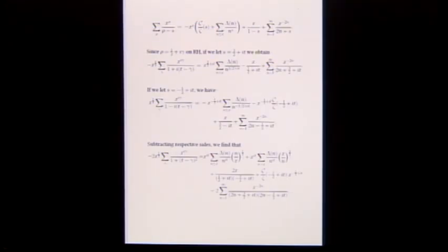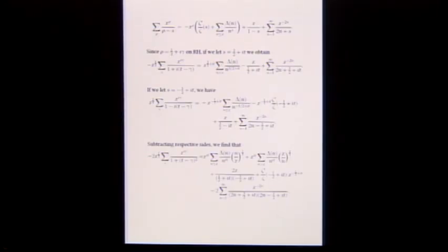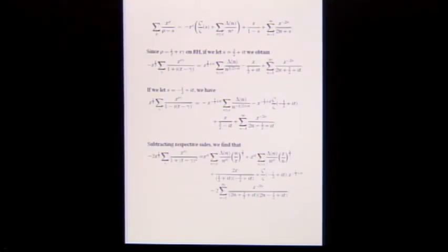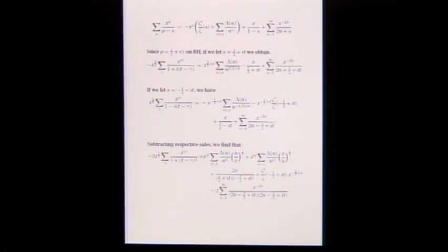Now subtract the second expression from the first. On the left side you get the combination where the (1 plus i(t minus gamma)) and (1 minus i(t minus gamma)) factors combine by simple algebra. On the right-hand side the terms combine accordingly, including trivial zero contributions. This is the explicit formula that Montgomery starts with.